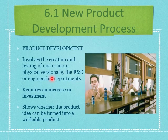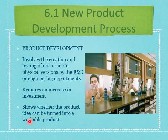Step five is business analysis, which involves a review of sales, cost, and profit projections to find out whether they will satisfy the company's objectives. If yes, you move on to step six: product development. This involves the creation and testing of one or more physical versions — typically the first prototype of the product. It requires increased investment because you buy technology and machinery, acquire expertise, and demonstrate whether the product idea can actually turn into a workable product.